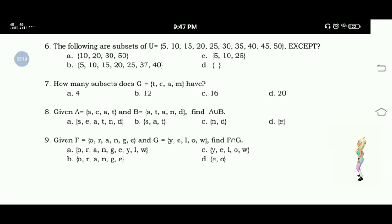The correct answer for number 6 is Letter B, in which, as you can see, element 37 is not an element of U.